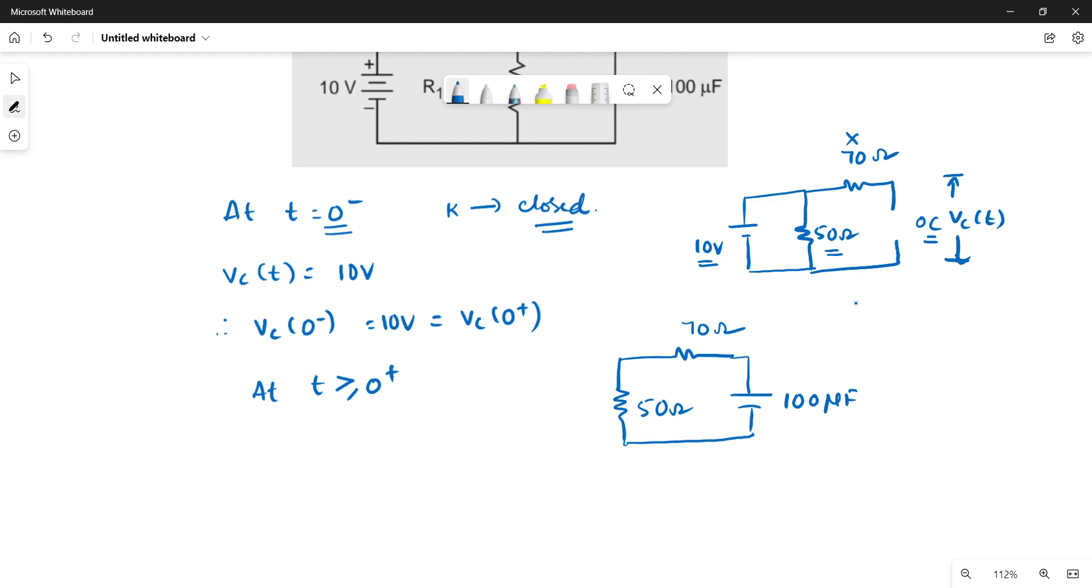Now it is source free since there is no source. Initially at t equal to zero minus, the capacitor was charged through the 70 ohms. Now it will discharge through the 50 and 70 ohm resistors in this closed loop.